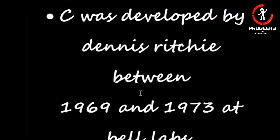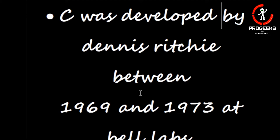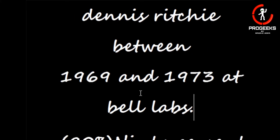C was developed by Dennis Ritchie between 1969 and 1973 at Bell Labs. C language Dennis Ritchie ne ki thi, unho ko is language ki khoj karne mein 1969 se 1973 tak ka samay laga tha. Unhone C Programming ki khoj Bell Labs mein ki thi.